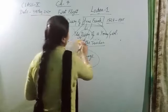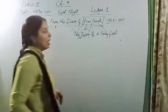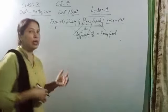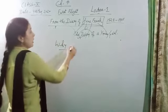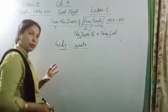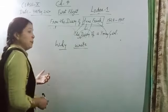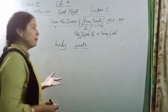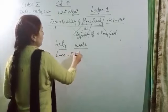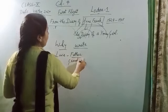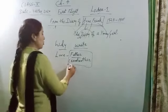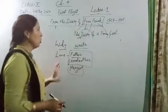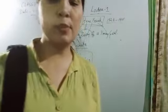You have to remember the name she gave her diary - Kitty. She also described things regarding her father, mother, and grandmother. She had love for her father and mother. Besides that, her sister Margot and her friends are also mentioned. Now let's move toward the word-to-word explanation of the chapter.